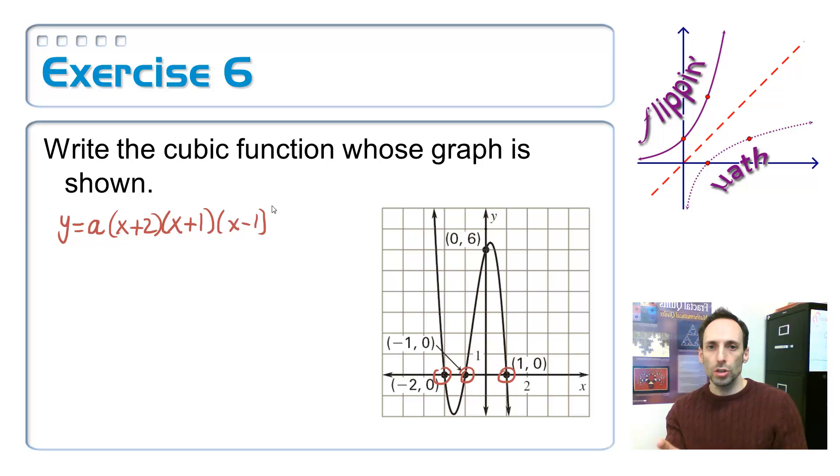So here is the equation. If you got that much, you got half of the work done. Last thing that we need to do is find out what this a value is. So this is kind of like intercept form whenever it was a quadratic, but now we're doing it for a cubic form. So now I'm just going to take this point, (0,6), and put that in for x and y into that equation so I can find out what a is. Put 6 in for y and put zeros for all the x's.